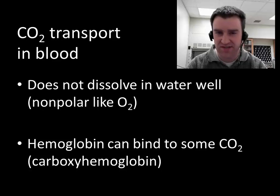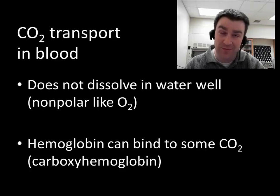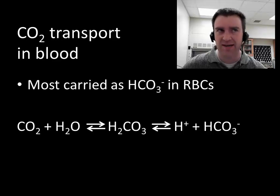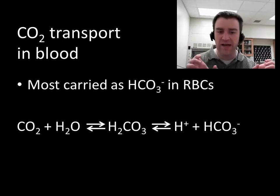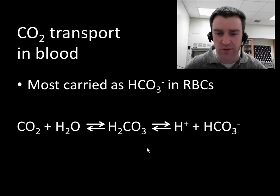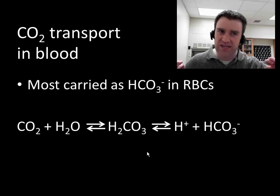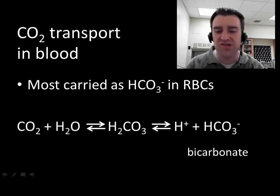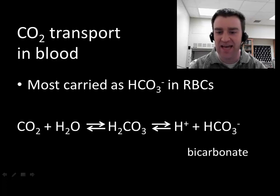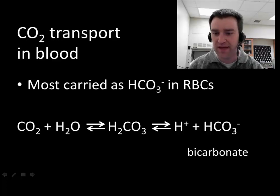A not-insignificant percentage of carbon dioxide is carried on hemoglobin, but the vast majority diffuses into red blood cells. An enzyme there takes carbon dioxide and water and combines them to form carbonic acid, H2CO3. Carbonic acid can, in equilibrium, release H+ and form HCO3-, which is called bicarbonate. That is how the vast majority of carbon dioxide is carried — as bicarbonate ion in your blood. HCO3- is fully charged, which is what makes it dissolve in water so well.